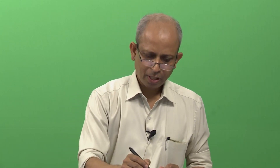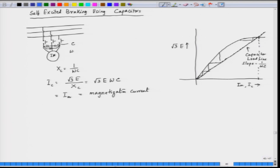When the motor speed comes down, the induced EMF also comes down. The frequency also comes down. Let us draw the magnetizing characteristic and the capacitance load line for a reduced frequency. If the frequency reduces, we will get a different magnetization characteristic — this is for a reduced value of frequency. The magnetization characteristic also reduces proportionately. So if f1 is the original frequency and f2 is the reduced frequency, then f2 is less than f1.